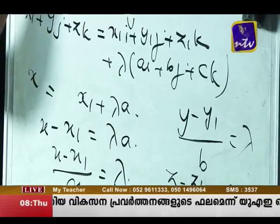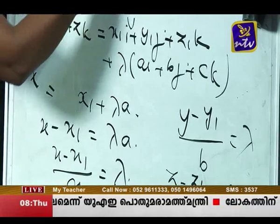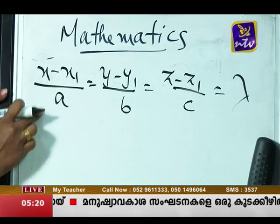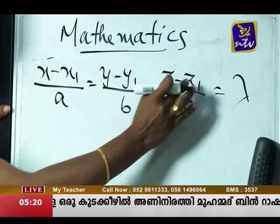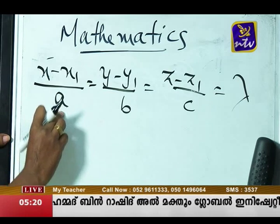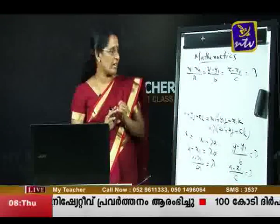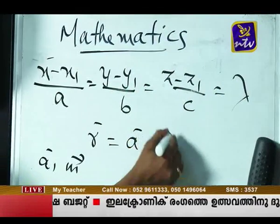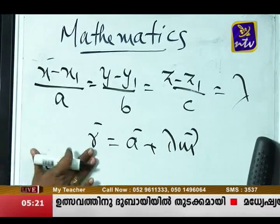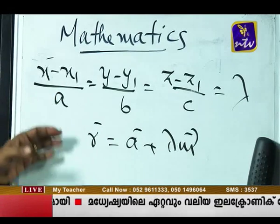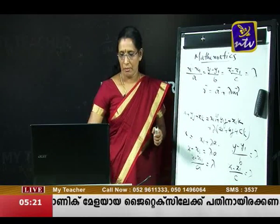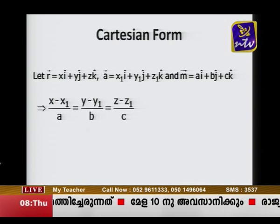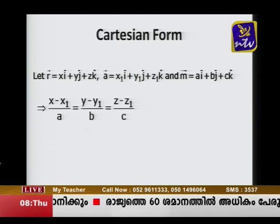Therefore (x - x1)/a = (y - y1)/b = (z - z1)/c = λ. This is the Cartesian equation of a line passing through point (x1, y1, z1) and parallel to a vector with direction ratios a, b, and c.